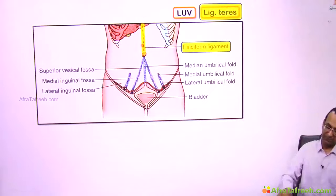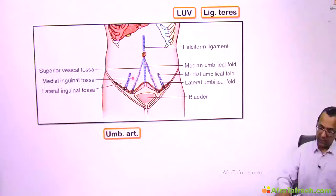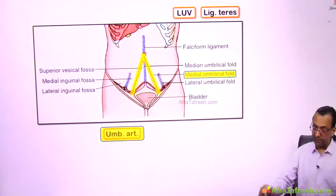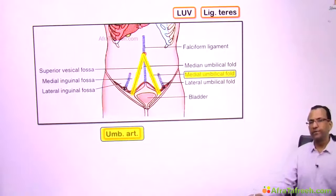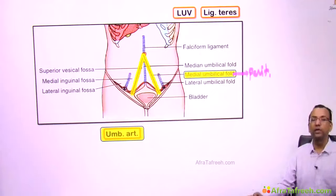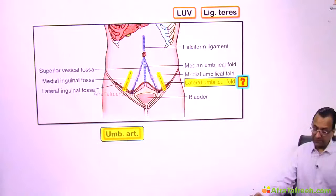The umbilical arteries produce the medial umbilical ligament, and over these ligaments there are peritoneal folds called the medial umbilical folds. So the medial umbilical fold is the peritoneal fold over the remnant of the umbilical arteries.